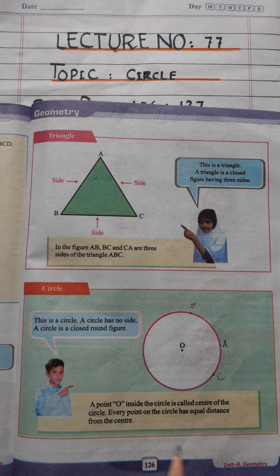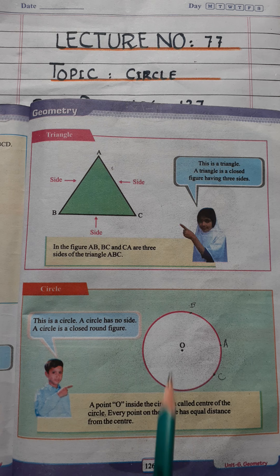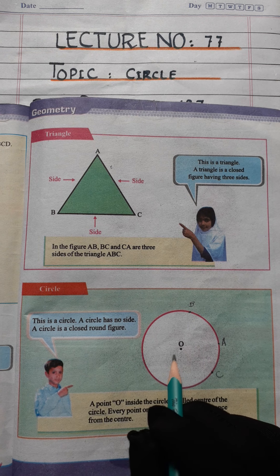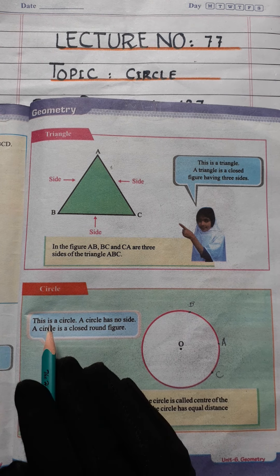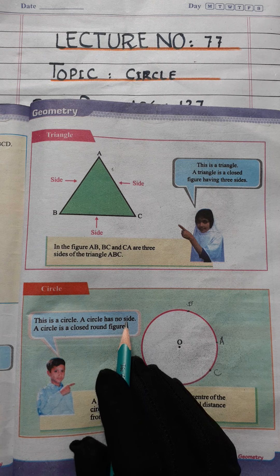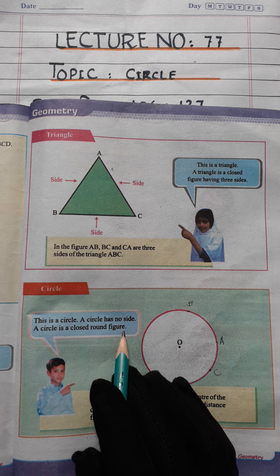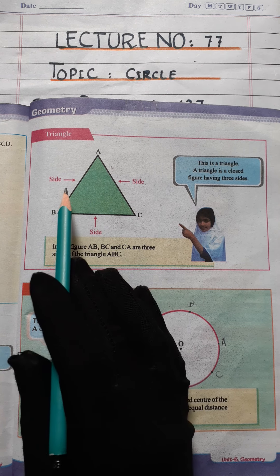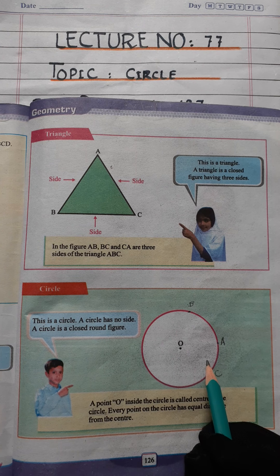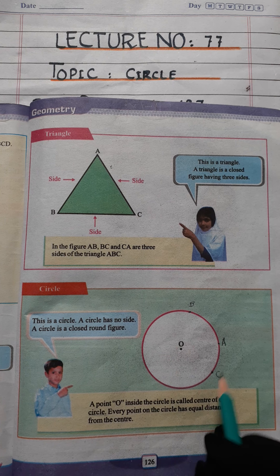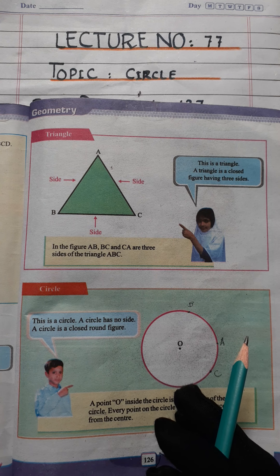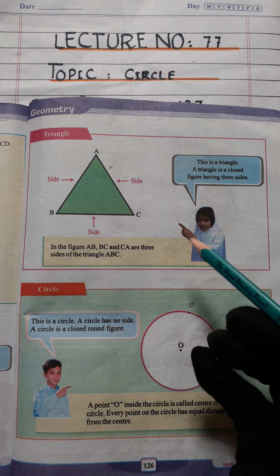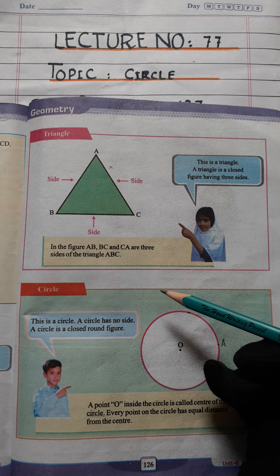Kindly open your maths book to page 126. This is the topic of circle. A circle is a closed round figure — it has no side. Look at the rectangle: a rectangle has four sides. In a square, four sides; in a triangle, three sides; but in a circle, no sides. It is a round, closed figure.